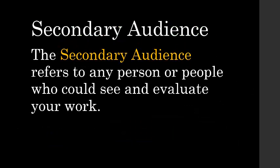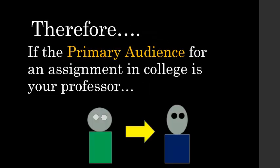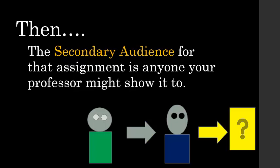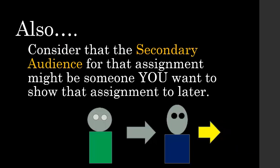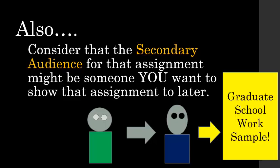The secondary audience refers to any person or people who could see and evaluate your work. Therefore, if the primary audience for an assignment in college is your professor, then the secondary audience for that assignment is anyone your professor might show it to. Also consider that the secondary audience might be someone you want to show that assignment to later — for example, you'll write that paper and submit it as a graduate school work sample.